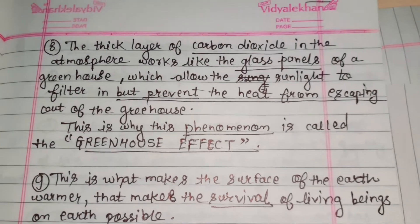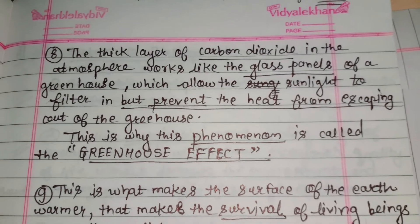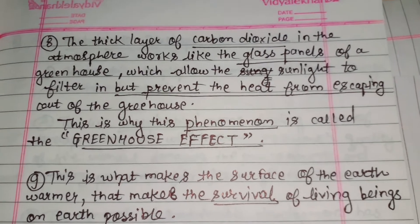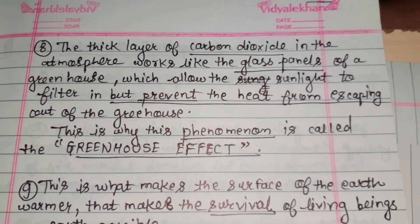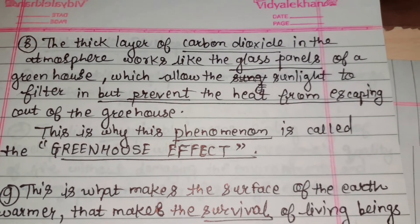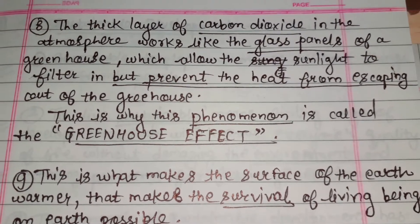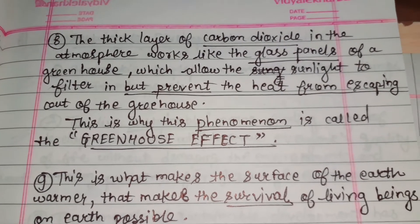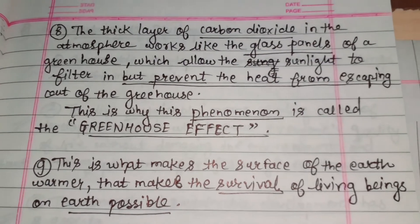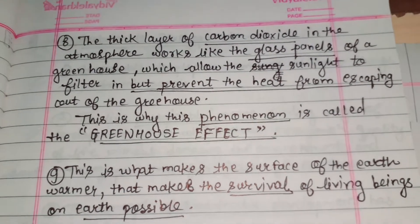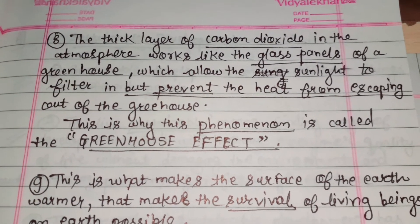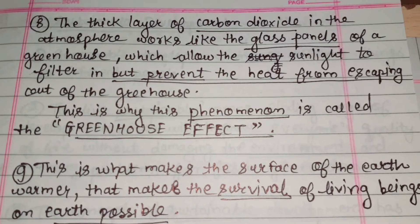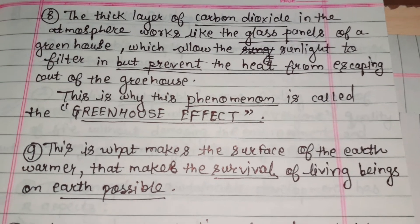The thick layer of carbon dioxide in the atmosphere works like the glass panels of a greenhouse, which allow the sunlight to filter in but prevent the heat from escaping. This carbon dioxide layer acts like glass panels — it filters the sunlight and allows it to enter, but the con is that it prevents the heat from escaping out. And that is why this phenomenon is called the greenhouse effect.